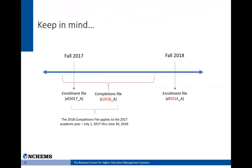Here is a visual example of the time periods that completions and enrollment surveys cover. You can see that the Fall Enrollment 2018 file is for the time period after the Completions 2017–18 data file. Therefore you would want to use the Fall Enrollment 2017 file, EF_2017A, to match that time frame.